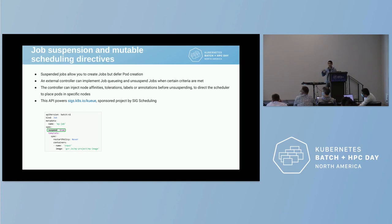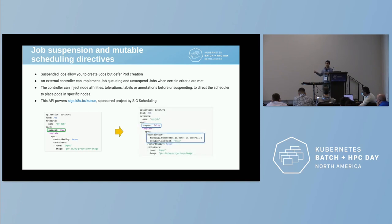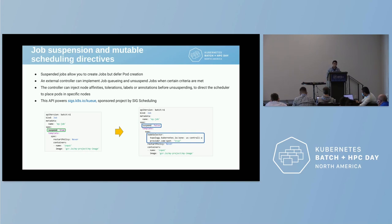Once this external controller considers that there is capacity in the cluster, there is quota, and we've dealt with fair sharing within the cluster for all our users, we can start the job and maybe even place it in a particular place. In this case, we've decided that this job is going to run in US Central 1A zone on Spot VMs because that's what we have capacity for. And this is exactly what one of the projects in SIG Scaling is doing — it's using these APIs to implement these semantics. But the interesting thing is that any other job queueing operator can use the same APIs without having to rewrite the job controller.